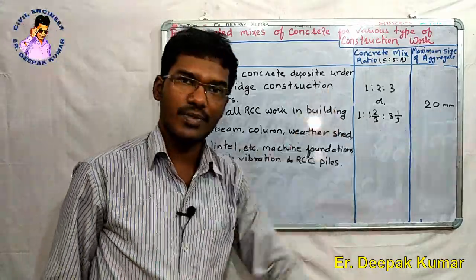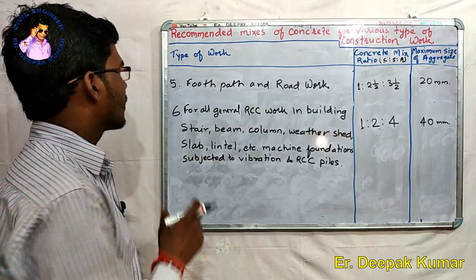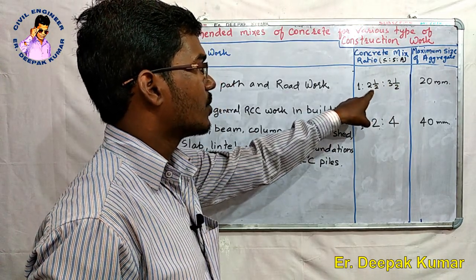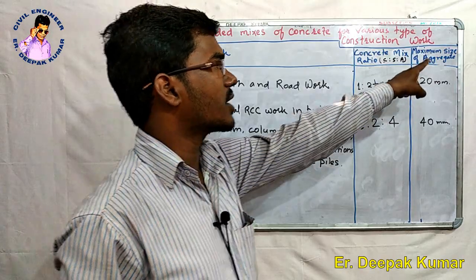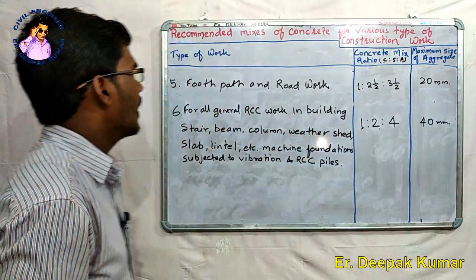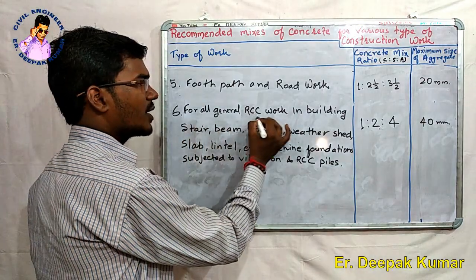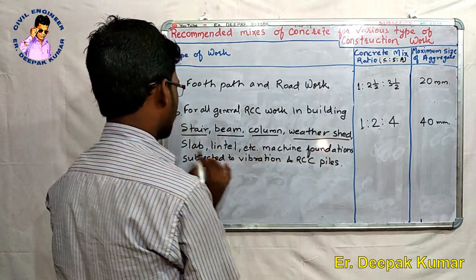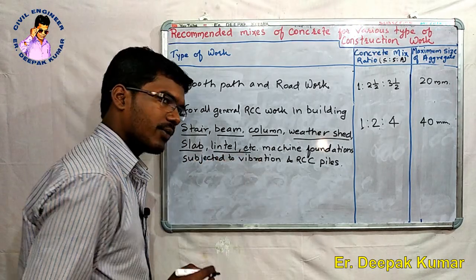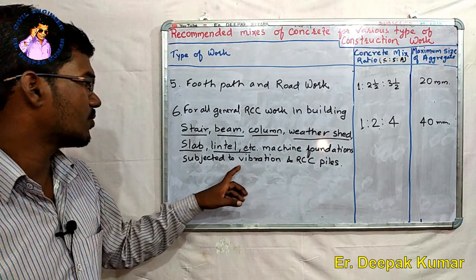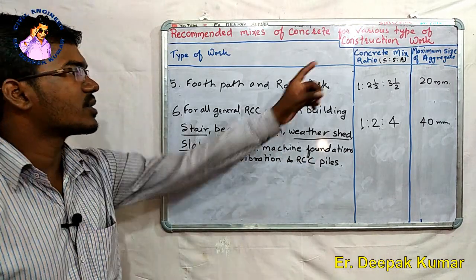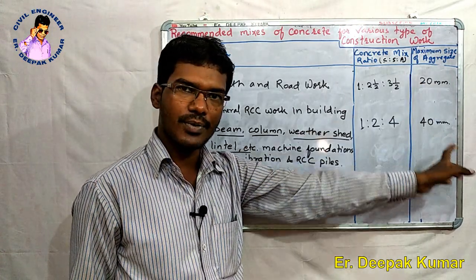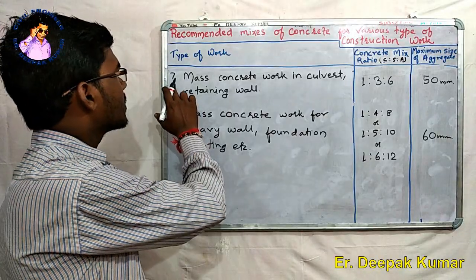The fifth type is footpath and road work. The concrete mix ratio is 1:2.5:3.5, and the maximum size of aggregate is 20mm. The sixth type covers all general RCC work in buildings such as stairs, beams, and columns, with a maximum aggregate size of 40mm.